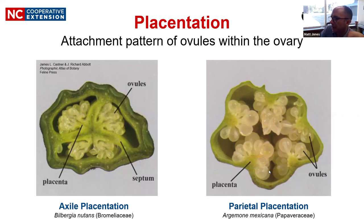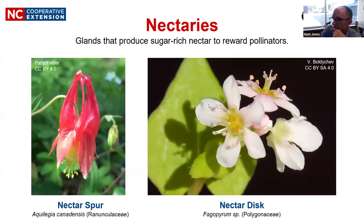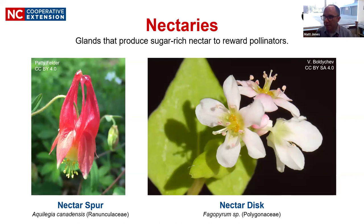Contrast that to a member of the poppy family with parietal placentation, where the ovules are attached to the outer wall of the ovary. Other things to be aware of are nectaries, which can occur in many different locations — sometimes near stamens, sometimes at the base of the corolla, or near the base of the ovary.